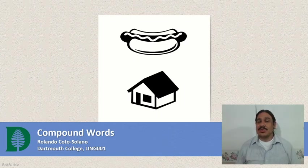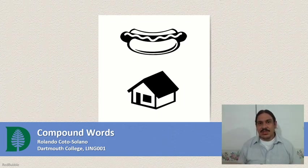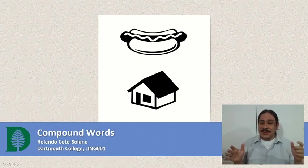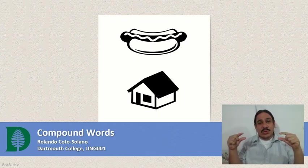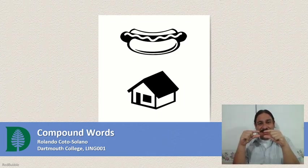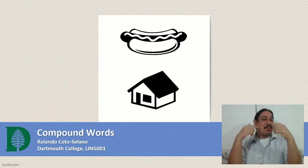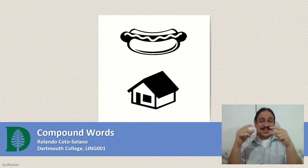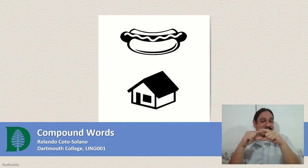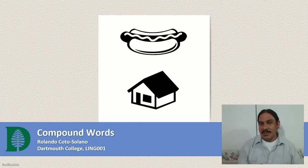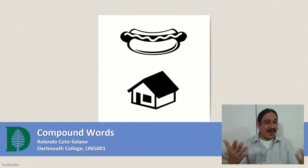In this video, we're going to talk about a very common morphological process in English. It's the process of adding two words together so that the resulting structure means more than just its constituent words. We're talking about compounds, like a hot dog.